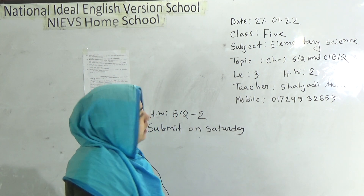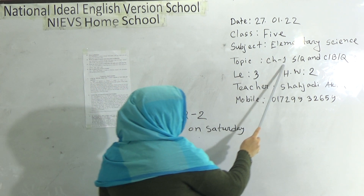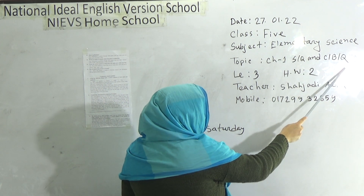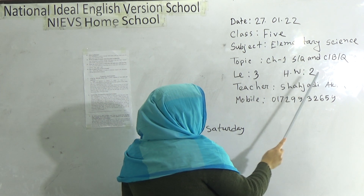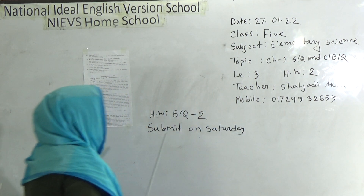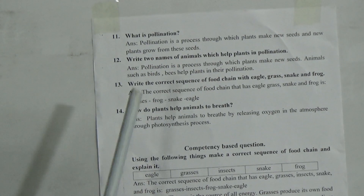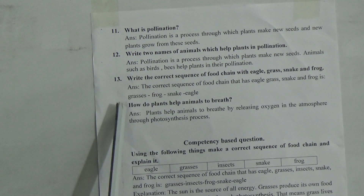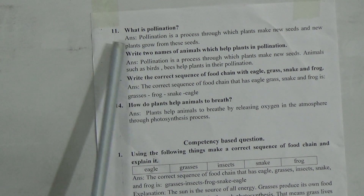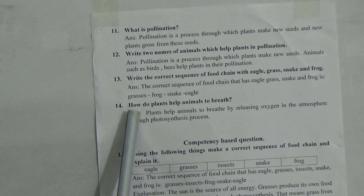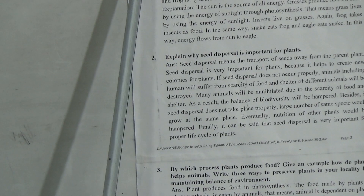My dear students, our today's topic is Chapter 1 — Short Question Answer and CBQ. Today's lecture number 3 and HW number 2. Let's start our class. This is Chapter 1. In our previous class, we have learned 10 short question answers. Today we will discuss from short question number 11 up to short question number 14. Then we will discuss competency-based questions — CBQ 1, 2 and 3.